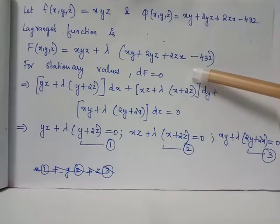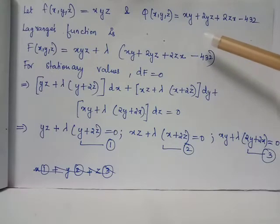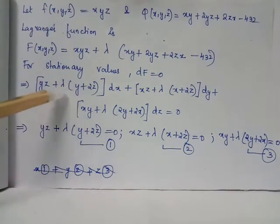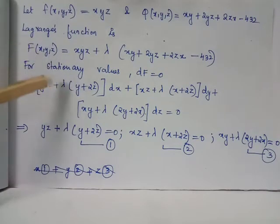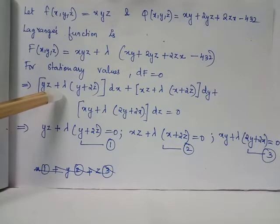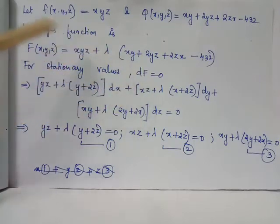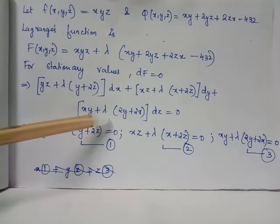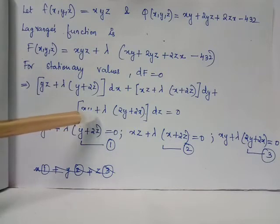When we partially differentiate capital F with respect to x, y, z separately we get the terms written as coefficients of dx, dy and dz. The coefficient of dx is the partial derivative of capital F with respect to x keeping y and z as constant. The coefficient of dy is the partial derivative with respect to y keeping x and z constant. And the coefficient of dz is the partial derivative with respect to z keeping x and y constant.